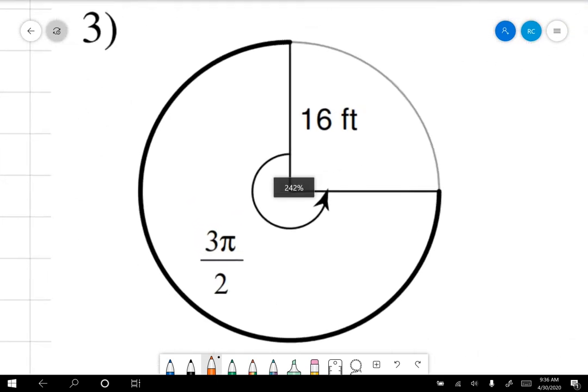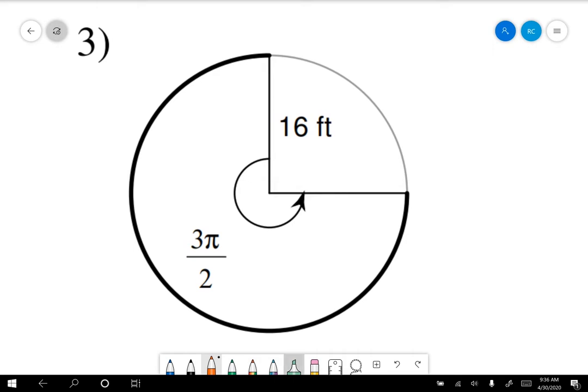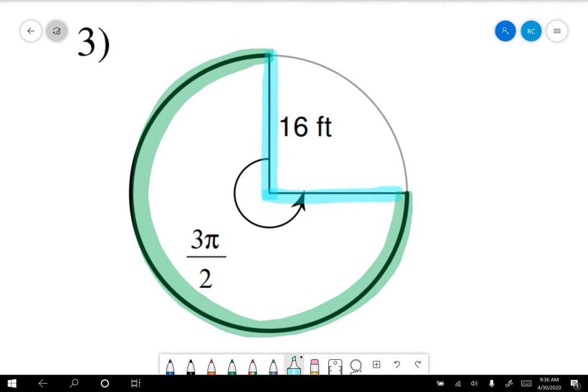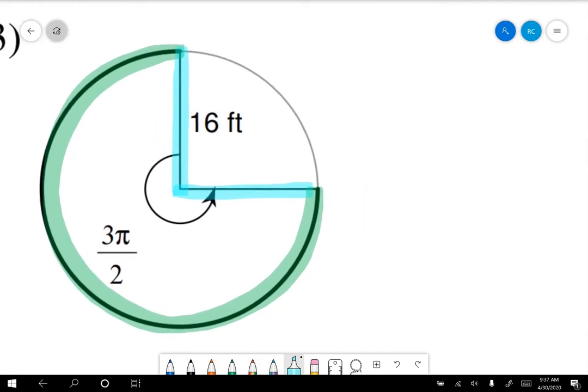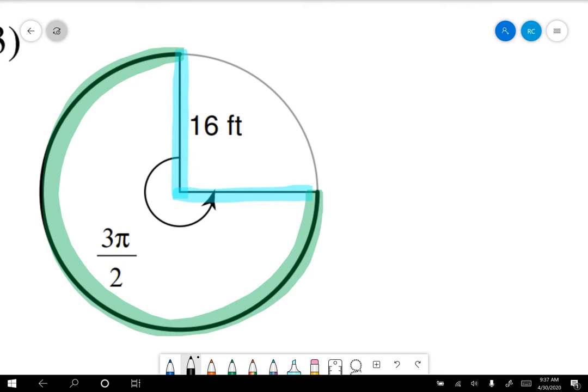So let's look at number three. We're looking for the length of this arc all the way around, and our angle is 3π/2. Now that's weird. It doesn't tell us whether it's in degrees or whether it's in radians.